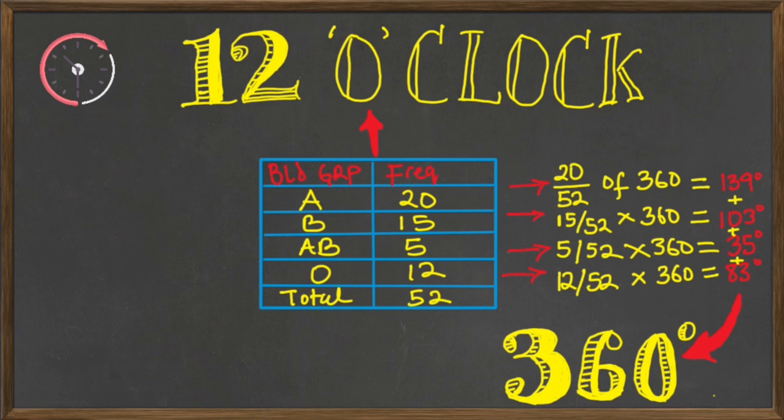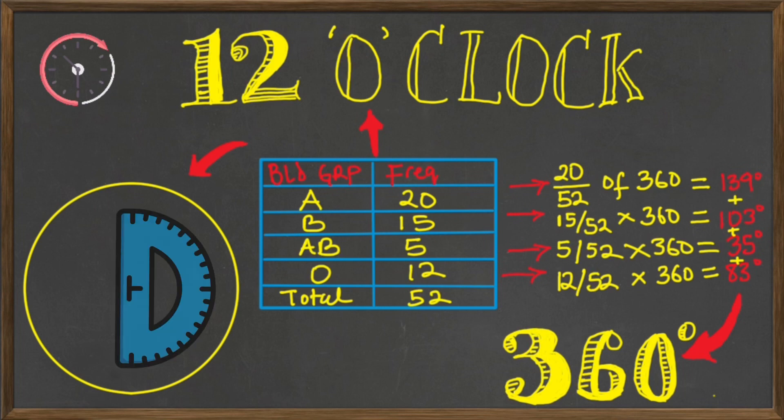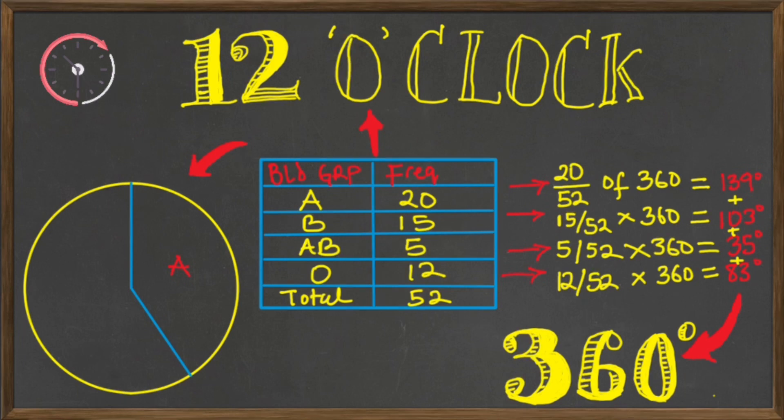Also, it's best to start with the largest to the smallest or vice versa. So our largest slice is going to be from blood group A because there were 20 individuals. And this occupies the largest angle which is 139 degrees. So we put 139 degrees.